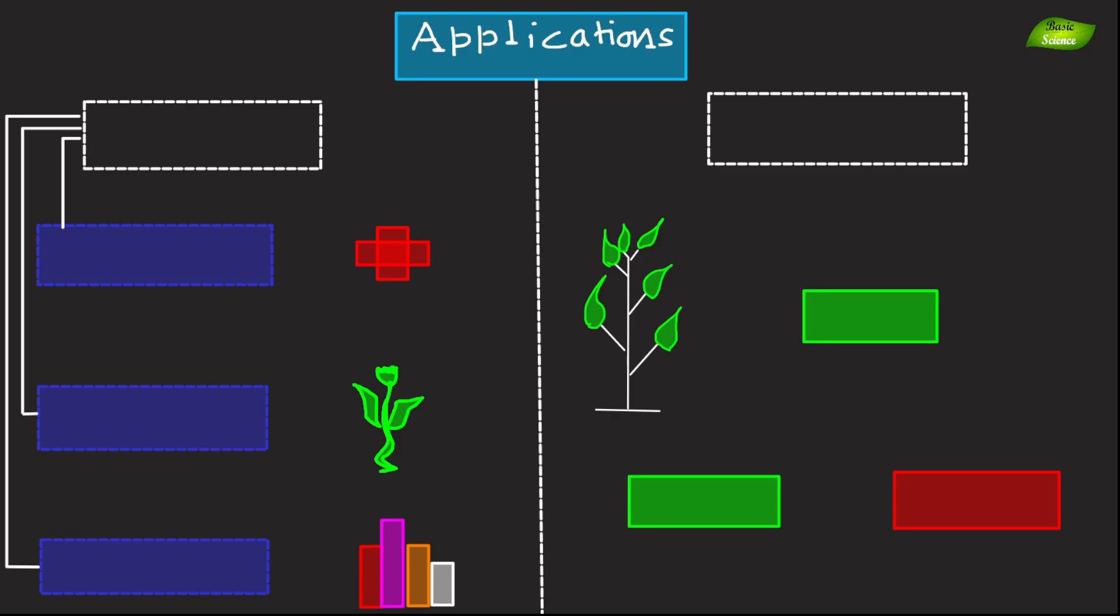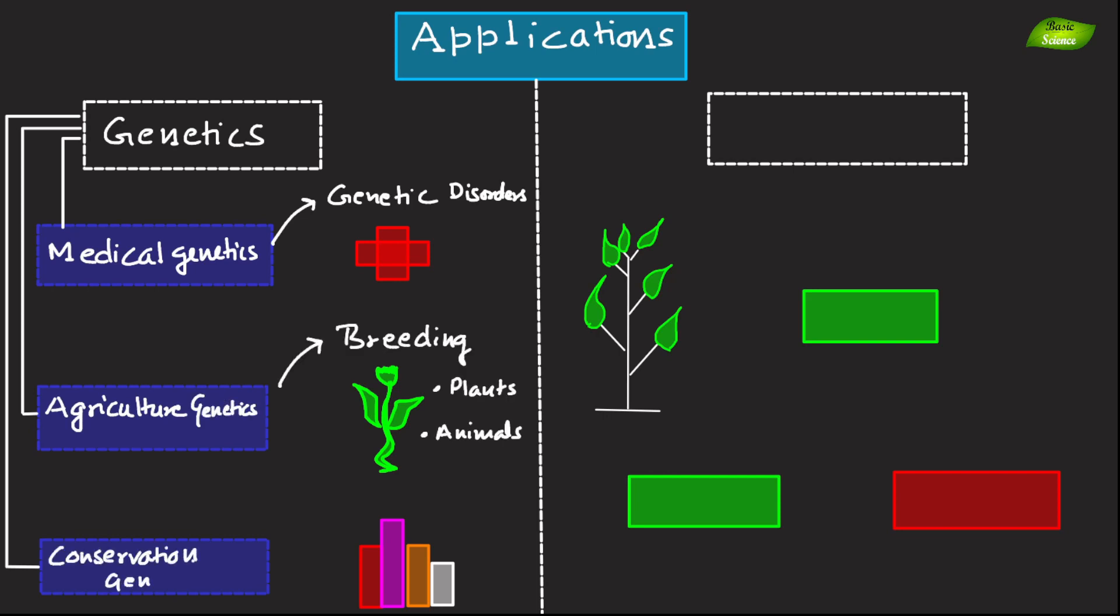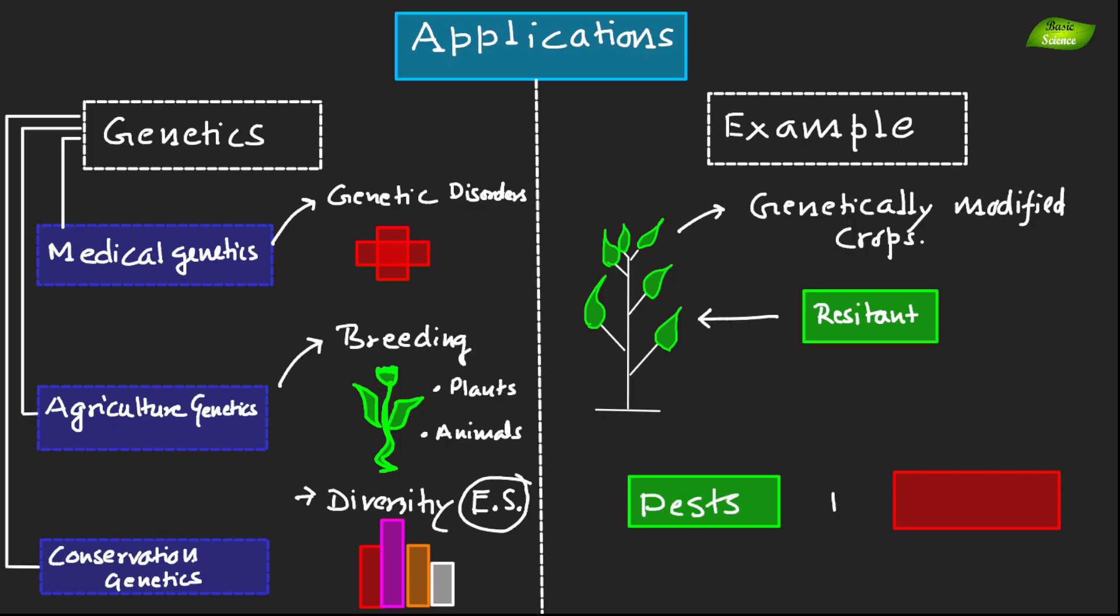Applications of genetics include medical genetics, which is diagnosing and managing genetic disorders, agriculture genetics, which is breeding plants and animals, and conservation genetics, which is preserving genetic diversity in endangered species. An example includes creating genetically modified crops that are resistant to pests and diseases, leading to higher yields and reduced pesticide use.